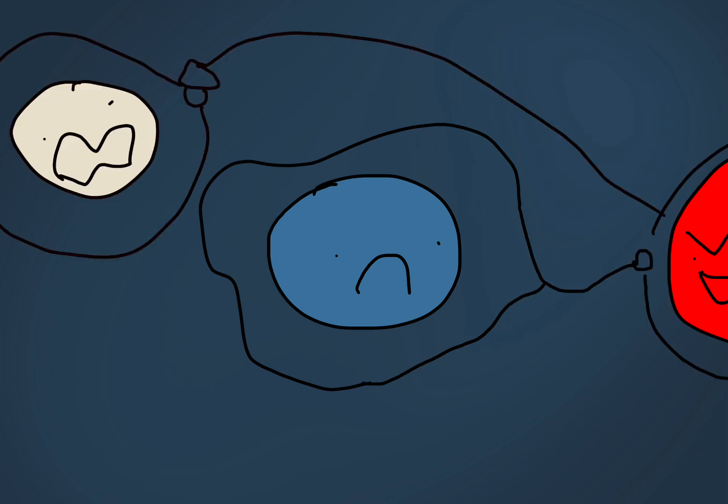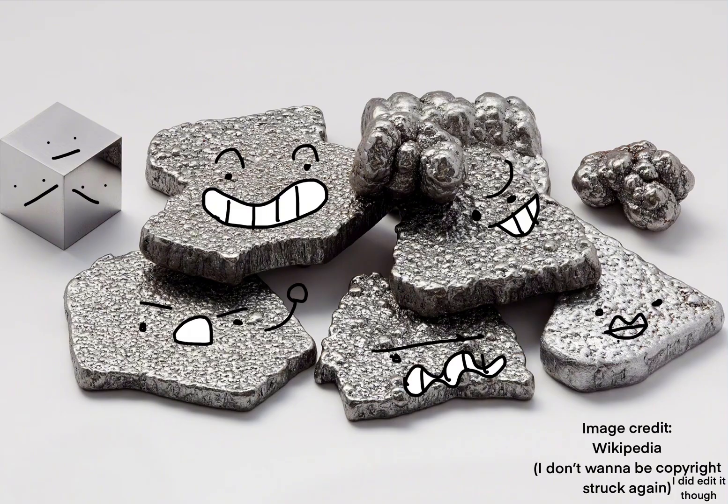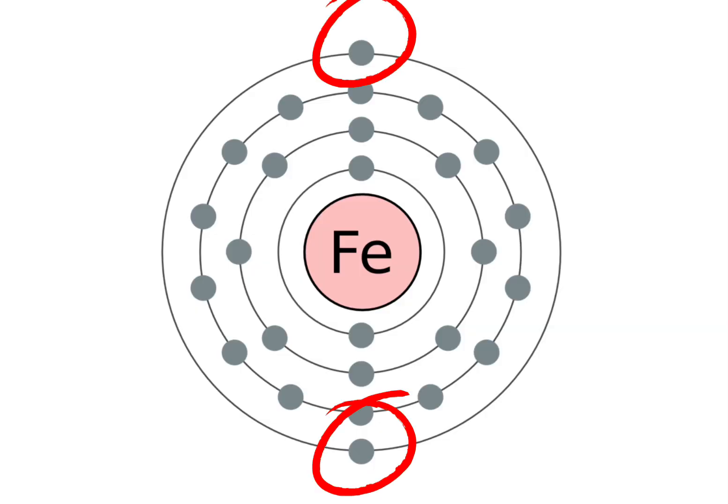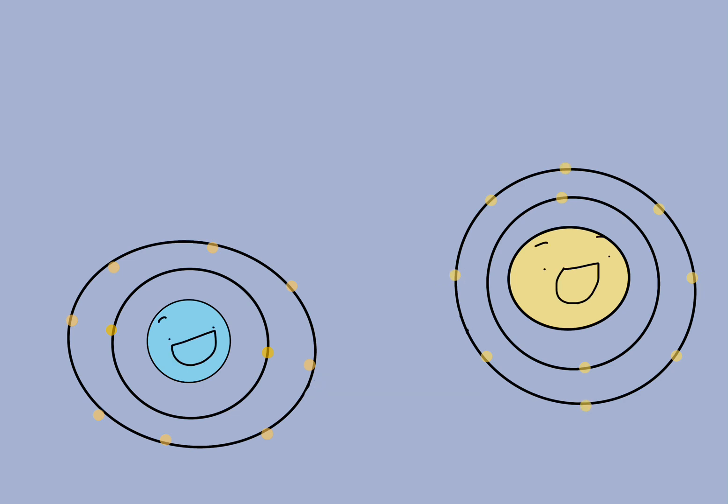Metals in displacement reactions are unstable because most of them have electrons in their outermost shell that they want to get rid of. When these metals give away their electrons, they become positive ions, otherwise known as cations.